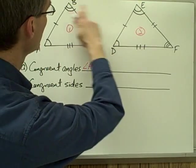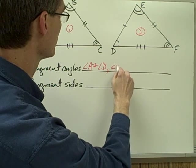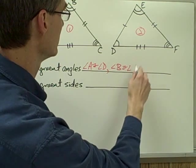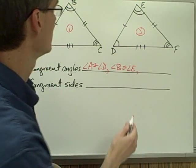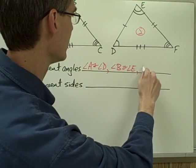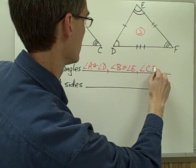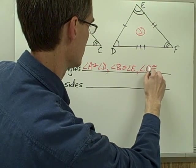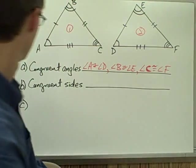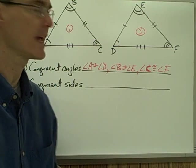Angle B on this triangle and angle E on this triangle are congruent — angle B congruent to angle E. And then angle C on this triangle and angle F — angle C is congruent to angle F. So there are all my pairs of congruent angles.